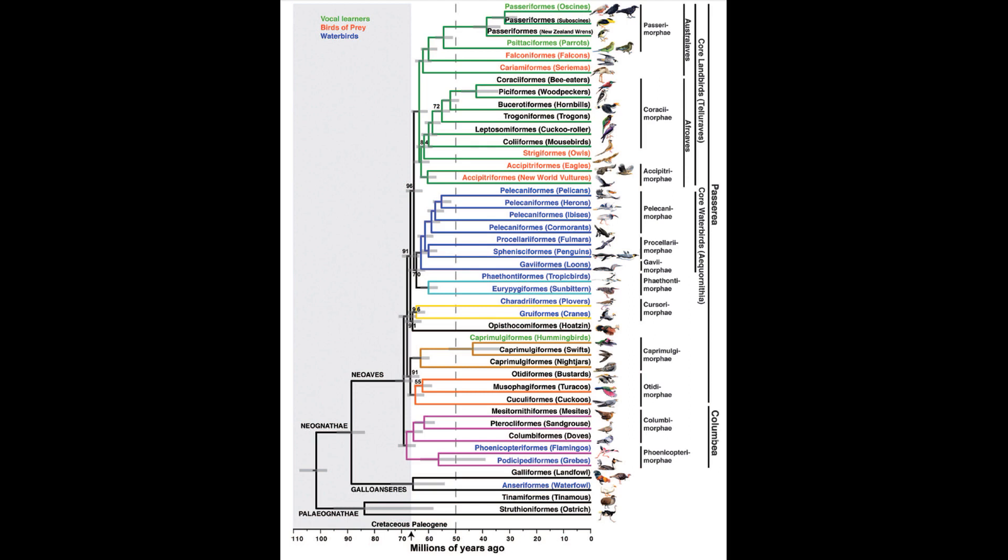We have discussed bird systematics before in the video Hummingbird Evolution, but to quickly recap, birds split into two groups, Palaeognathae, the big flightless ratites and tinamou, and Neognathae. Neognaths in turn split into Galloanserae, the land and waterfowl, and Neoaves, the latter of which includes about 10,000 species, or 95% of all birds.